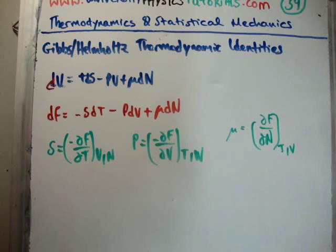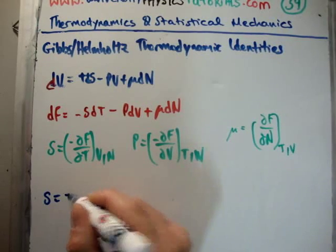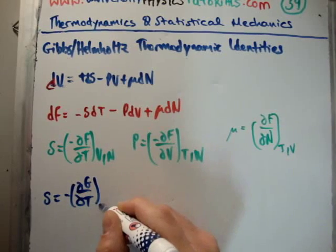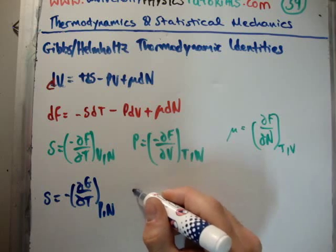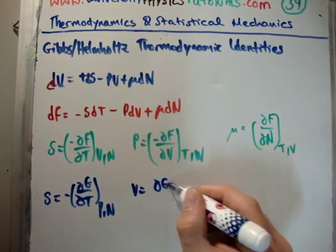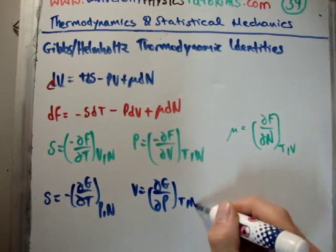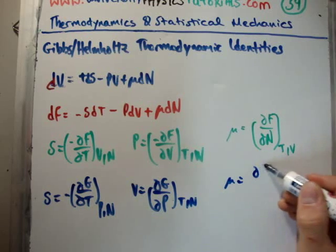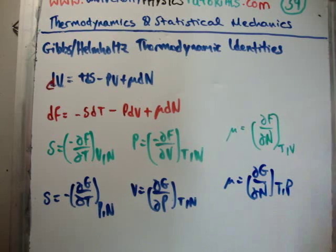And similarly, you can do the same thing with your Gibbs free energy. And we're going to get the following relationships. That S is equal to minus (∂G/∂T) holding the pressure and number of particles fixed. We know that the volume is equal to (∂G/∂P) holding the temperature and number of particles fixed. And we know that the chemical potential is equal to (∂G/∂N) holding the temperature and pressure fixed.